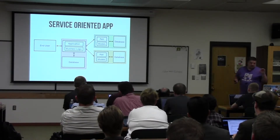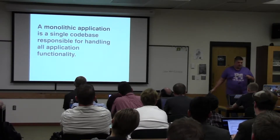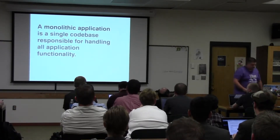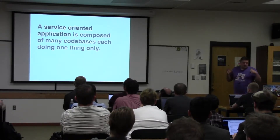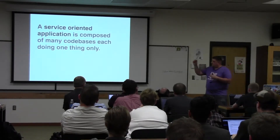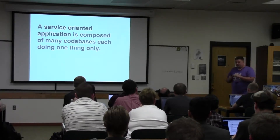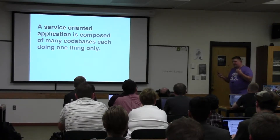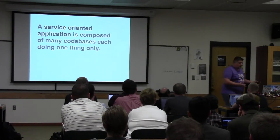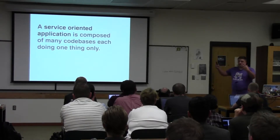To define the difference: a monolithic application is a single code base responsible for handling everything — if you want to perform a function, it's definitely going through that particular app. A service-oriented application is a set of code bases working together to solve a goal, where each code base does one thing or is responsible for one concept. It's important to distinguish between 'does one thing' and 'represents one concept' — in microservice terms, a service might only process payments, or you could represent all payments as one service.